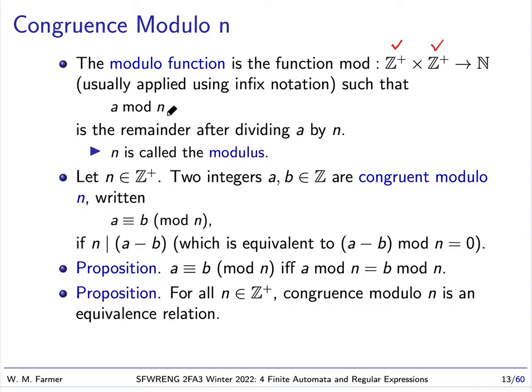If a is divisible by n, then the remainder will be zero. This is called the modulo function and n is called the modulus.